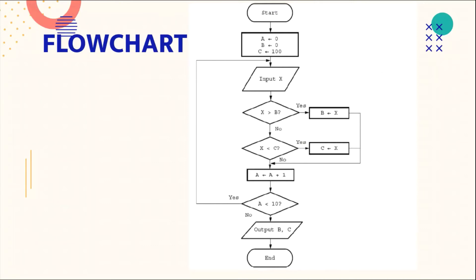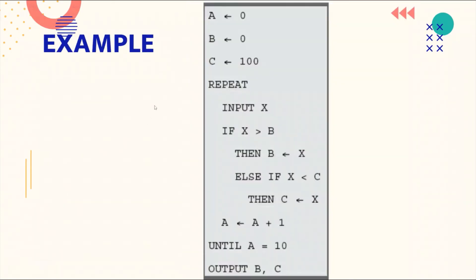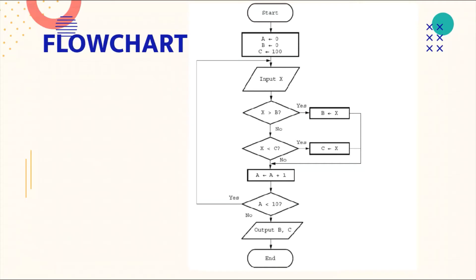This is the flowchart for that pseudocode. First, draw an oval and write 'Start'. Then draw a rectangle — this is for process. When you declare variables or constants, you use this shape. Here, a is 0, b is 0, and c is 100, so write that in the rectangle.